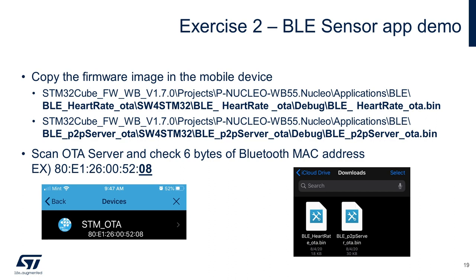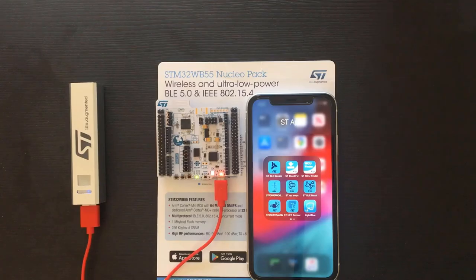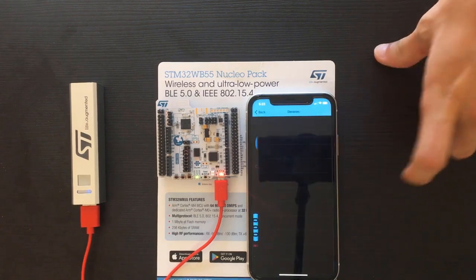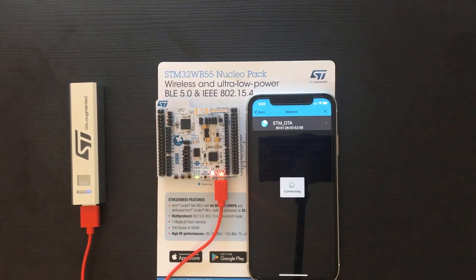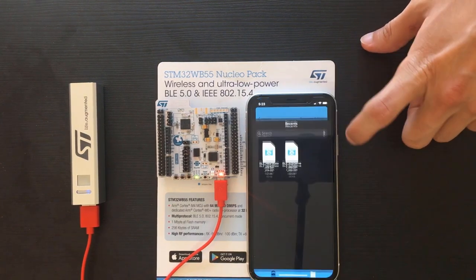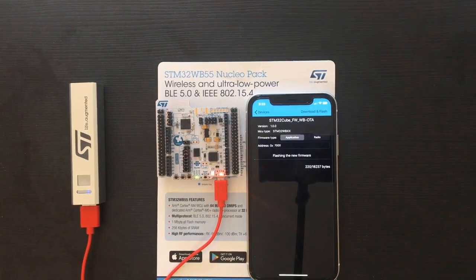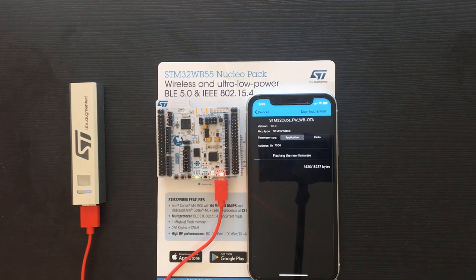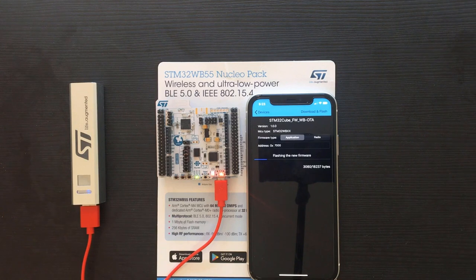Turn on your BLE sensor app and scan for nearby OTA server devices. Also take a close look at the six bytes of the Bluetooth MAC address, especially the first byte. A portable battery is connected to the Nucleo board to show this is a wireless demo. After selecting a nearby OTA server, select a firmware image you want to transfer. I'll select the heart rate OTA example. The address written in the app is the offset address — by adding 0x7000 to the flash memory start address 0x08000000, this becomes 0x08007000 as expected. I'll fast forward the transferring part for now.